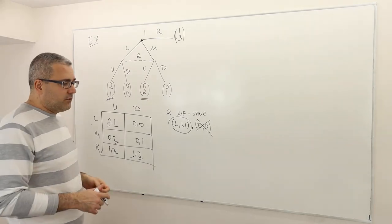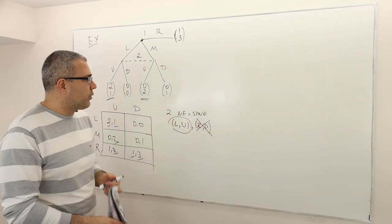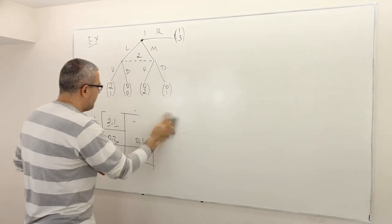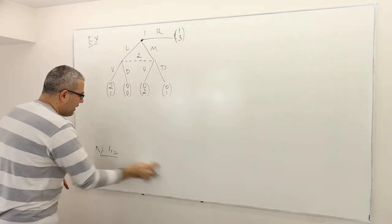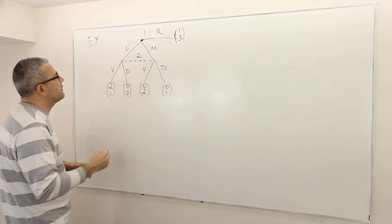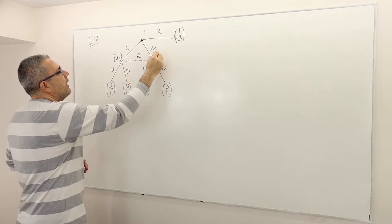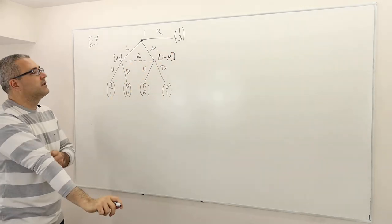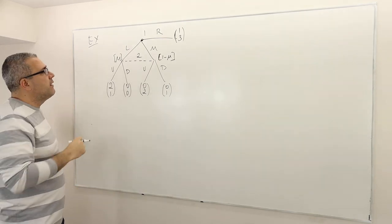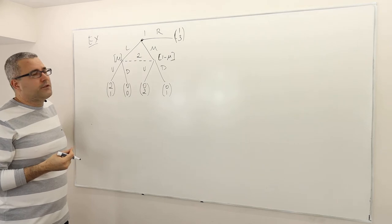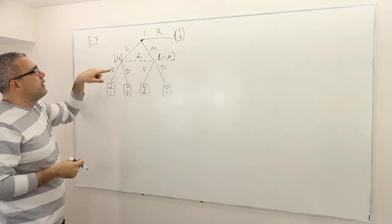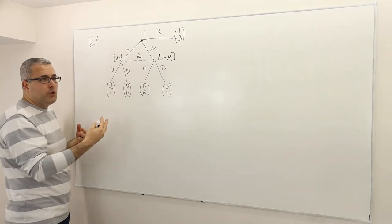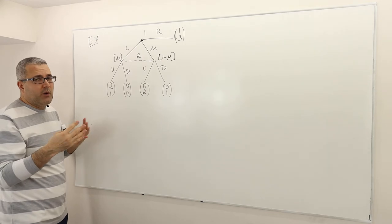We are going to search for the strategy profile that satisfies those four requirements. Start with requirement one. Requirement one says you have to have a belief μ here, and therefore one minus μ here. That's the only non-singleton information set. That's requirement one.